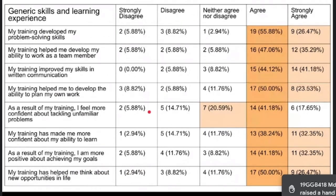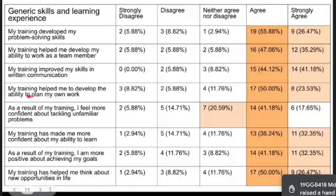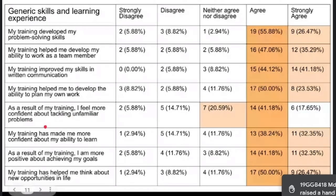When asked about generic skills and learning experiences: 'My training developed my problem solving skill' — around 80% agreed. 'My training helped me develop my ability to work as a team' — they agreed, as teacher education programs generally develop teamwork. 'My training improved my skills in written communication, essential for the 21st century' — they agreed. 'My training helped me develop the ability to plan my work' — planning being important for teacher education — they agreed. 'As a result of my training, I feel more confident about tackling unfamiliar problems' — 41% agreed, while 20% were undecided.